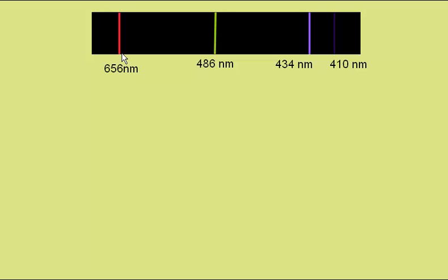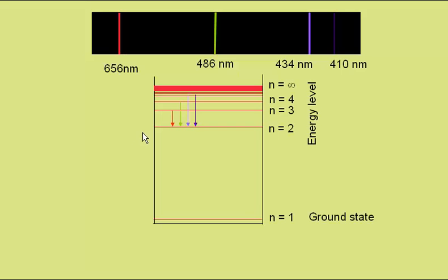For example, a red line here with a wavelength of 656 nm, a green line at 486 nm, and so on.